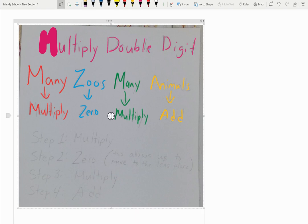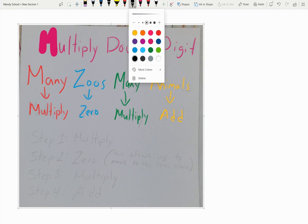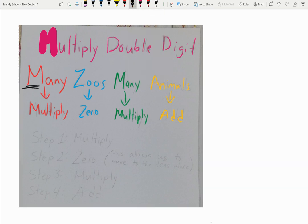Acronym, of course, means we're taking the first letter of each word and creating many multiply, zoos zero, many again multiply, and animals the A in add.